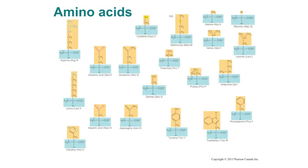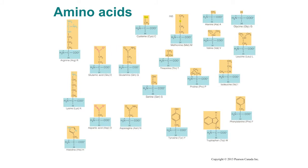To start, proteins are made up of small units called amino acids. Here you can see the representative set of 20 amino acids that make up all of the proteins in your cells. There are a couple of additional amino acids that are rarely used in certain organisms, but these are the standard set.